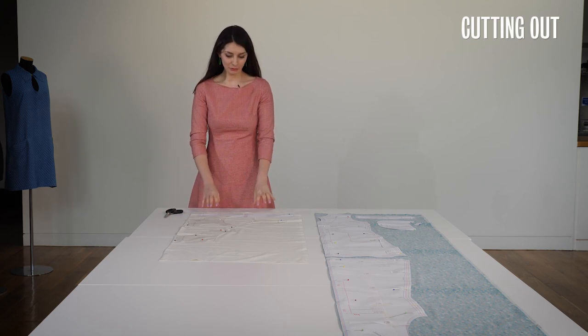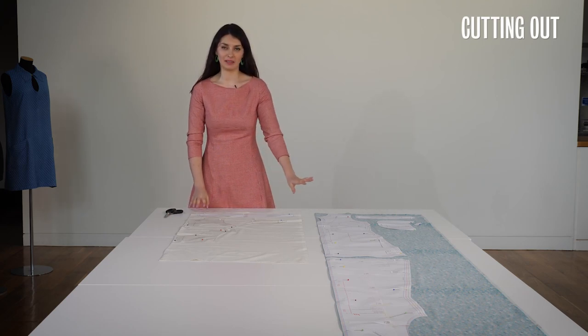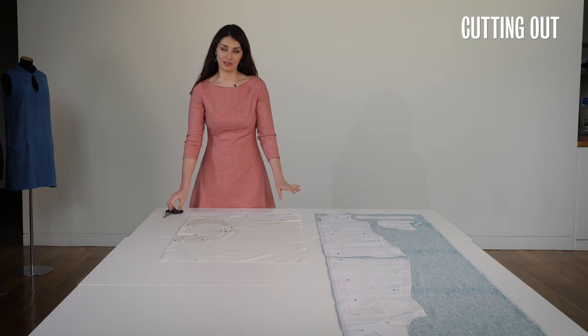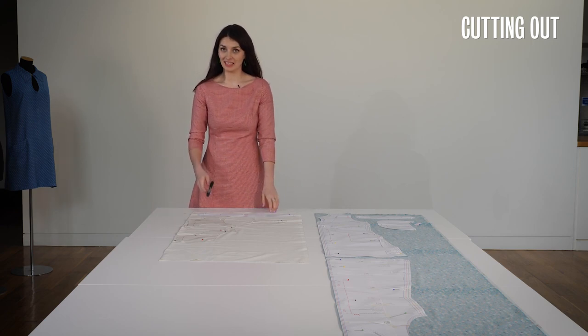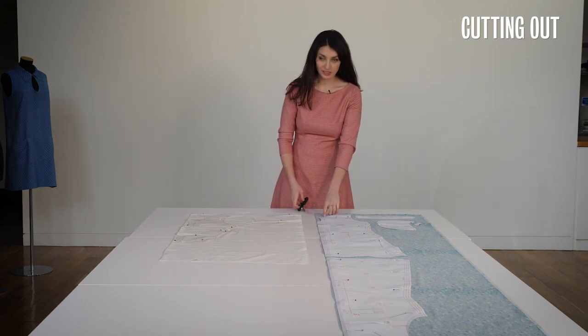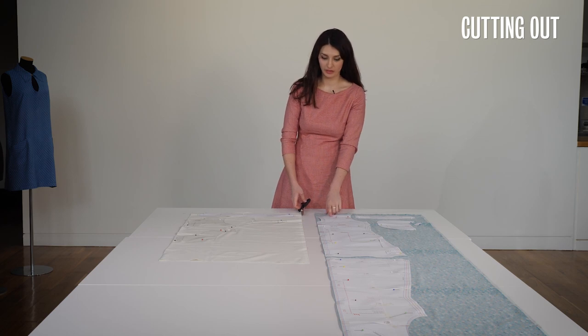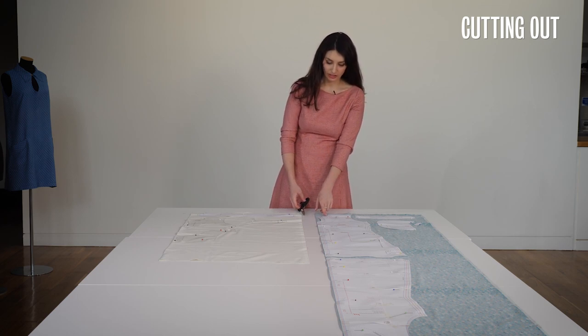Okay so now I have all of my pattern pieces pinned out and laid onto the fabric it's time to plunge my scissors in and get cutting. So the seam and hem allowances are already included within the pattern meaning I just need to cut exactly around the edge of the paper.